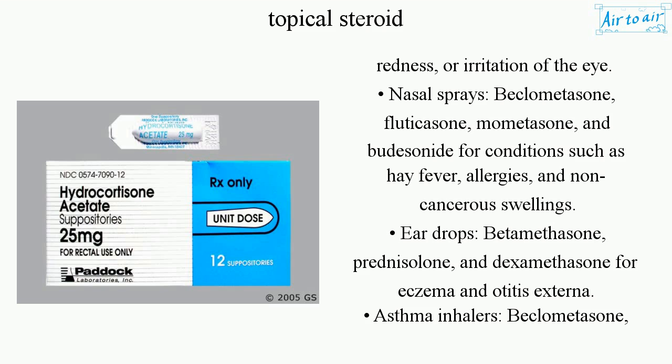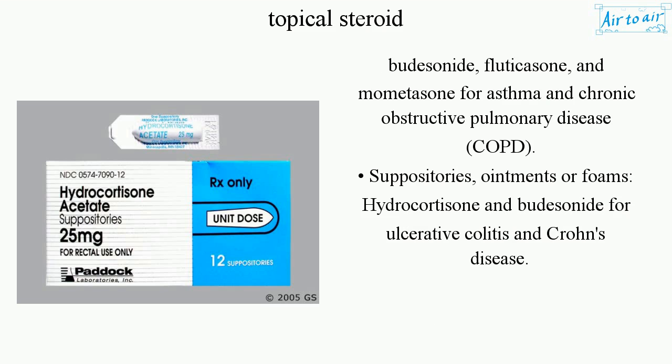Asthma inhalers: beclometasone, budesonide, fluticasone, and mometasone for asthma and chronic obstructive pulmonary disease (COPD). Suppositories, ointments, or foams: hydrocortisone and budesonide for ulcerative colitis and Crohn's disease.